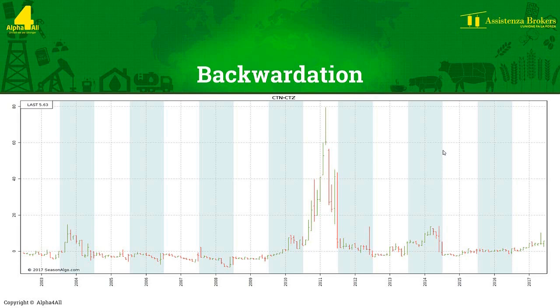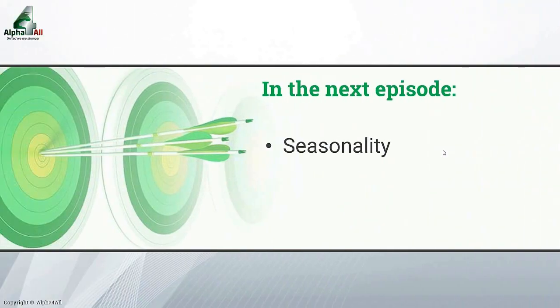In addition to exploring contango and backwardation, we've started to look at and use examples of the charts, graphs and information that we have at our disposal. By taking the data that we have and inputting it into our trading platform, we can begin to create a picture of the possible opportunities that exist to create effective spread trades. In the next episode, we will further explore the fundamental analysis that builds the basis for identifying, analysing and ultimately executing effective spread trades. More specifically, we will look at seasonality and the impact that this has on commodities. I look forward to speaking to you soon. Bye for now.